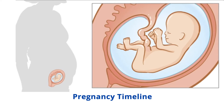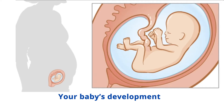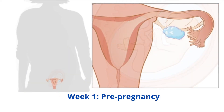Pregnancy timeline: the countdown of human development begins at week three after the woman's menstrual period. When counted this way, pregnancy will last a total of 40 weeks. Follow along the timeline and learn about significant events in your baby's development.